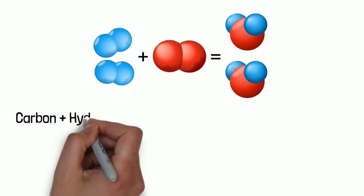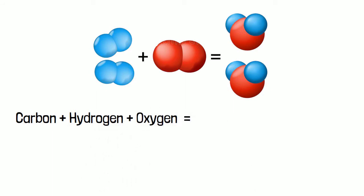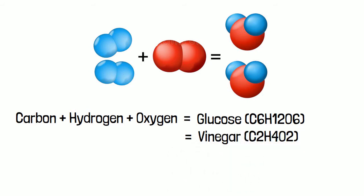For example, if you react certain carbon, hydrogen and oxygen together one way, you get glucose. If you react them together another way, you get vinegar. If you react them another way, you get fat. If you react them another way, you get ethanol.